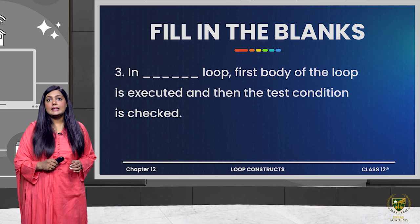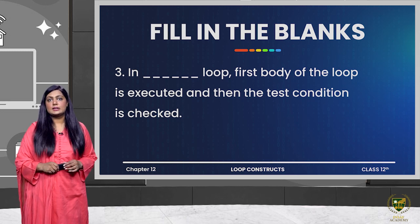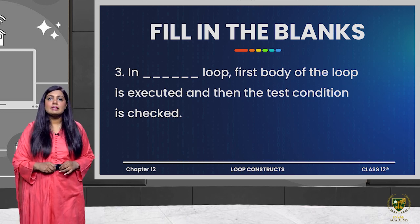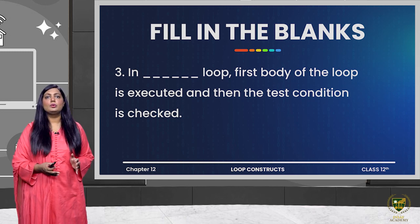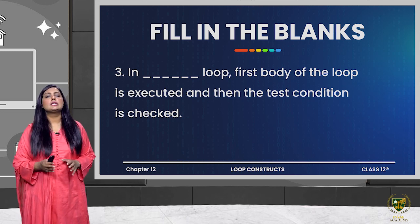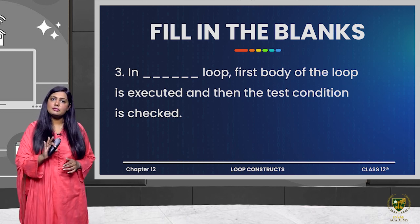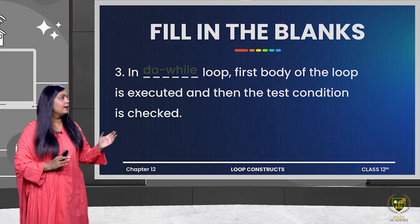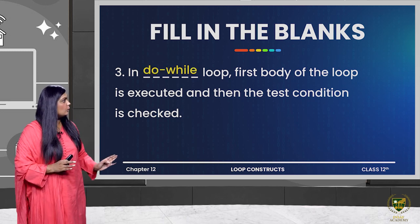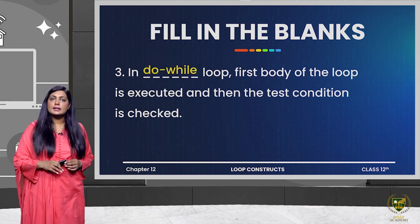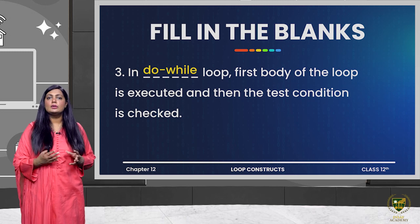The next question is: in which loop is the body of the loop executed first, then the test condition is checked? That is the do-while loop. If you remember the syntax of the do-while loop, in it there is no condition check at the start — it begins with statements and the condition comes at the end.